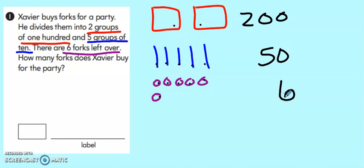Now you don't have to write those numbers next to it. Some people just like to count up the number. But sometimes it's nice to show it in expanded form. So we have 200, 50, and 6. Which means that Xavier bought 256 forks. He must be having some fancy party to have that many forks for it. There's definitely not just a few friends coming over.